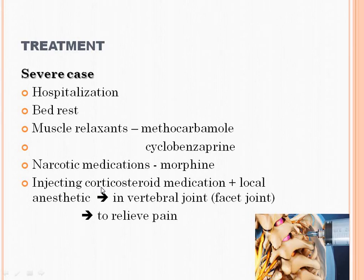In severe cases, first we should hospitalize the patient and give bed rest. Pain medication is given — narcotic medication and muscle relaxants such as Methocarbamol and Cyclobenzaprine are given. Injection: corticosteroid with local anesthesia in the vertebral joint — see here, we give the injection in the vertebral joint to help relieve the pain.